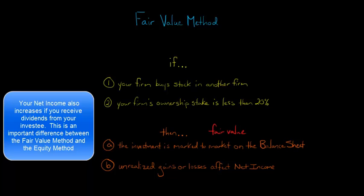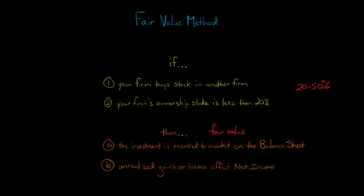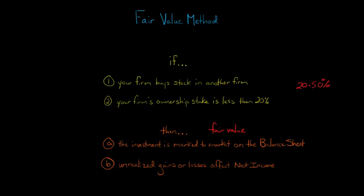That's basically the fair value method. Now, theoretically, we're talking about firms where you own less than 20% stake. However, if you own 20% to 50%, there's this thing called the equity method, which we'll talk about, but you can make an election to use the fair value method. So it's not always just firms that are less than 20%, but this is the general rule.